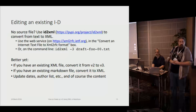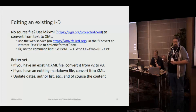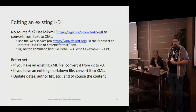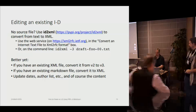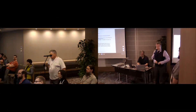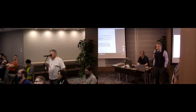Fred asks: do we have a V3 DTD? Henrik responds: the schema for V3 cannot be expressed as a DTD. It exists as a RelaxNG schema — as RNC or RNG files — and it's embedded in the distribution of XML to RFC. He can send either or both of those separately. If it's a fairly up-to-date editor, it should be able to take in the schema in that form.